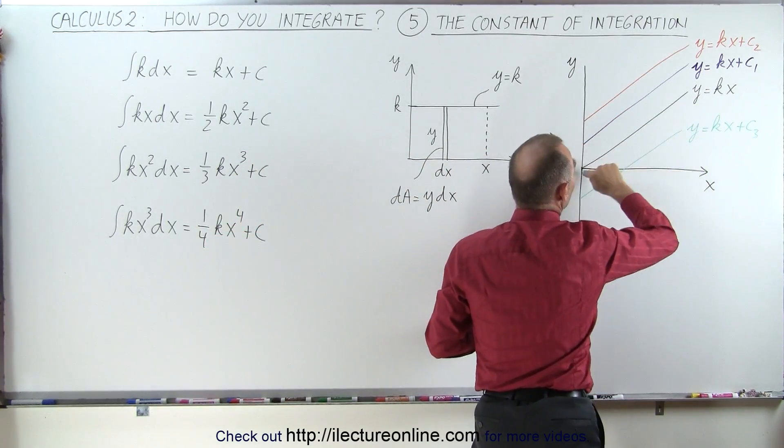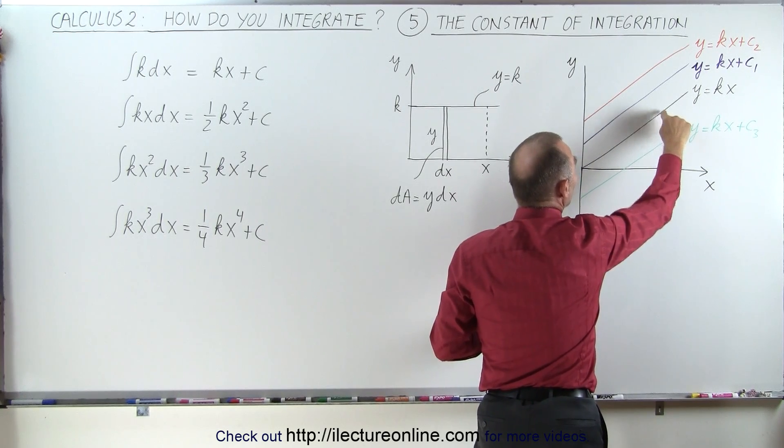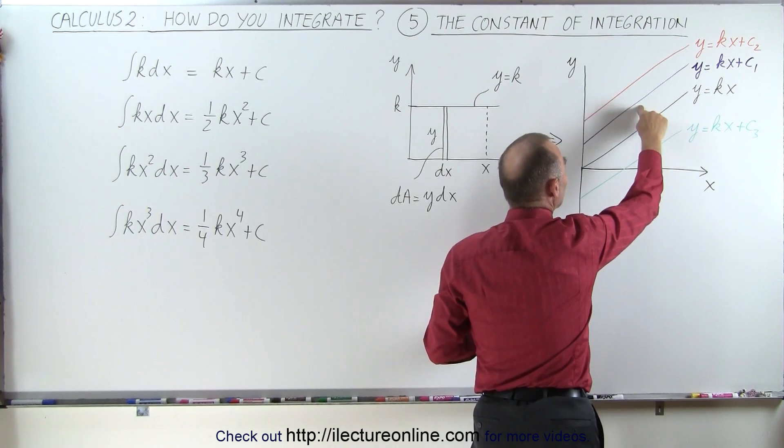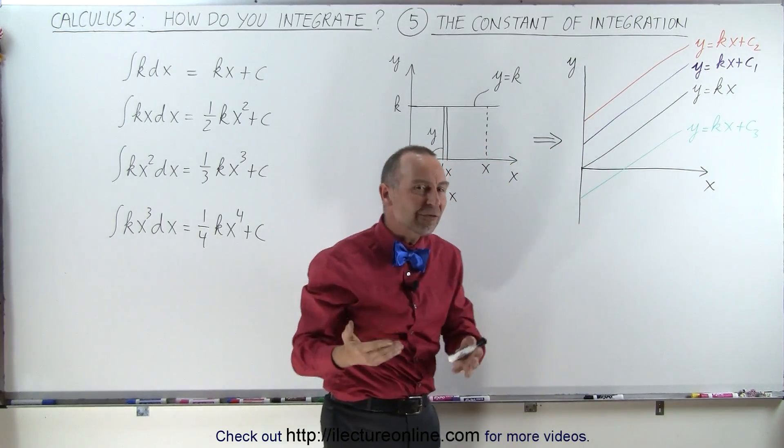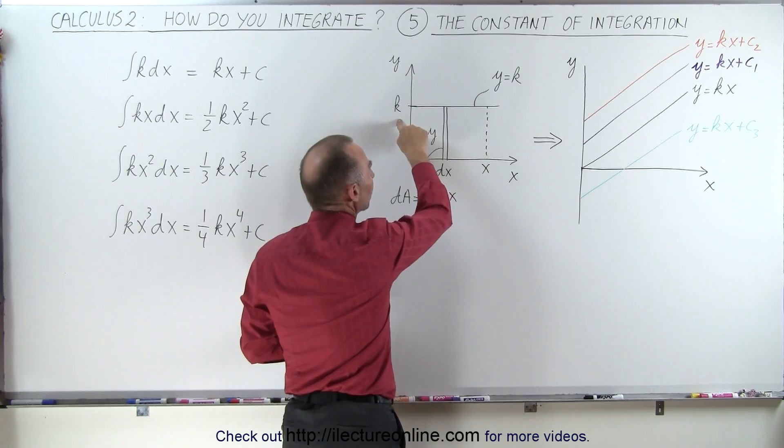We don't know if we end up with this equation, or this equation, or this equation, or this equation. In other words, we can end up with an infinite number of possibilities when we integrate a constant.